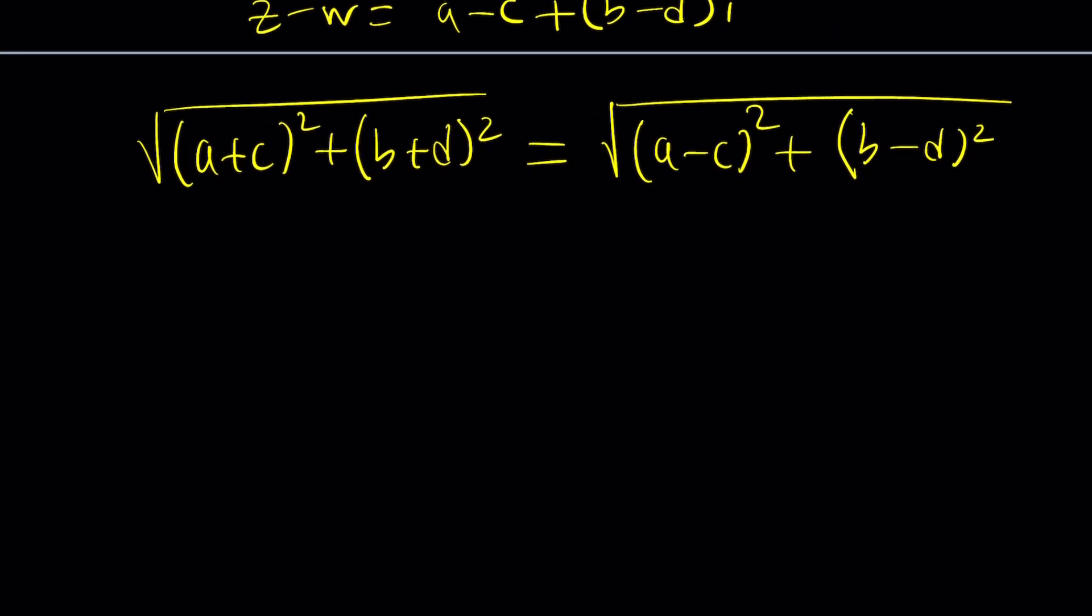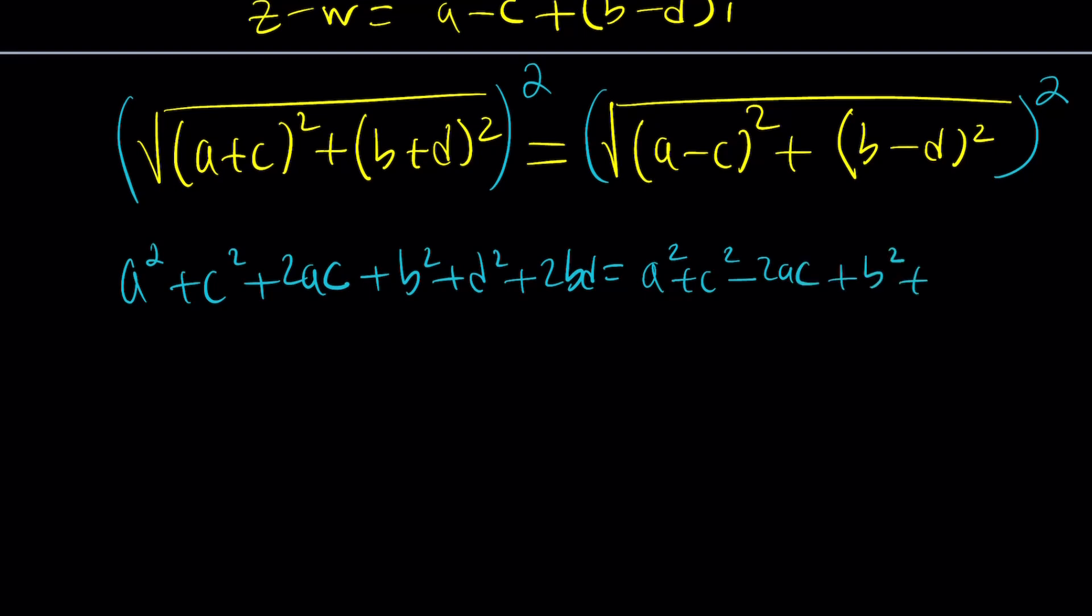Can we simplify this? Absolutely. We can square both sides, and that way we'll get rid of the radicals. Remember, these are all real numbers. We're going to get a squared plus c squared plus 2ac, and then b squared plus d squared plus 2bd. And then we're going to get a squared plus c squared minus 2ac plus b squared plus d squared minus 2bd. They're pretty much the same, except we have some minus signs on the right-hand side.